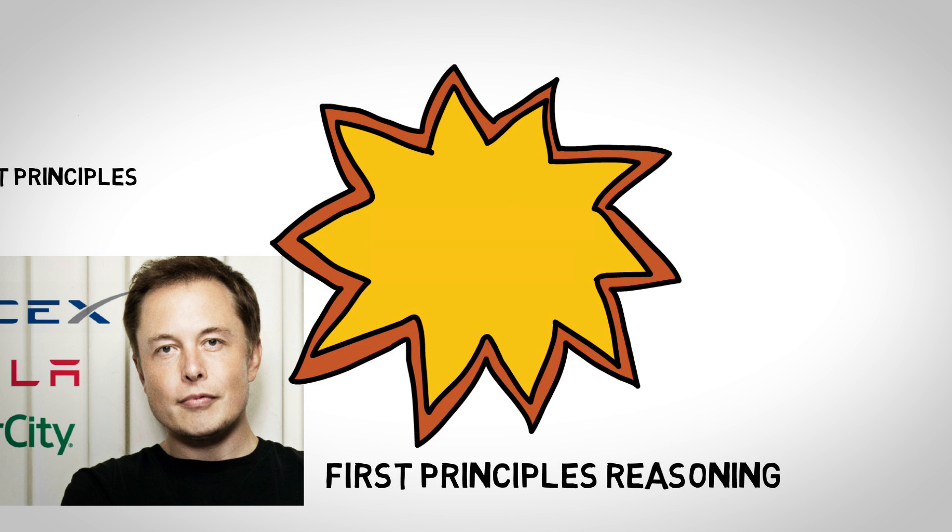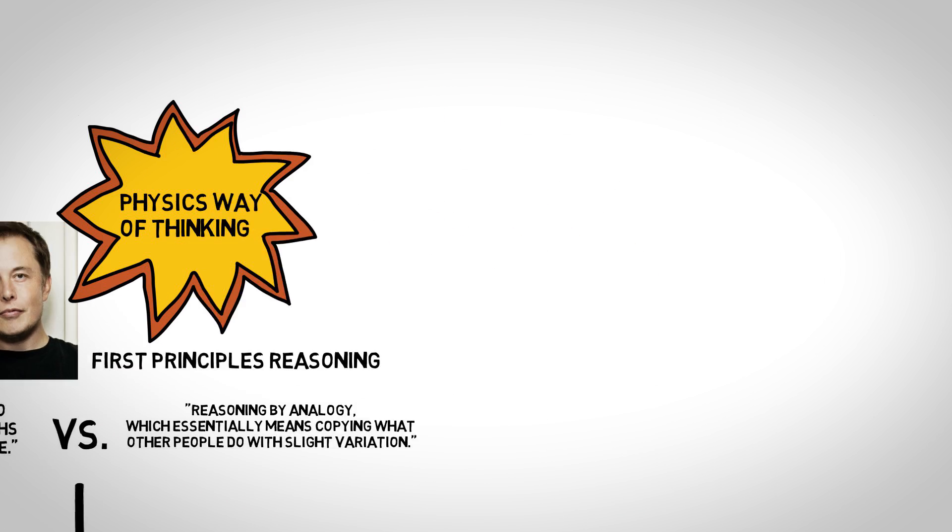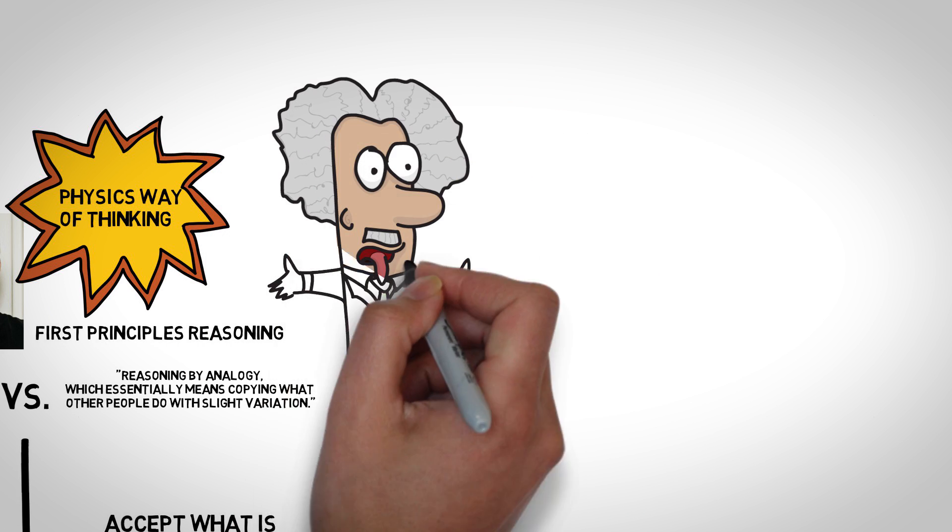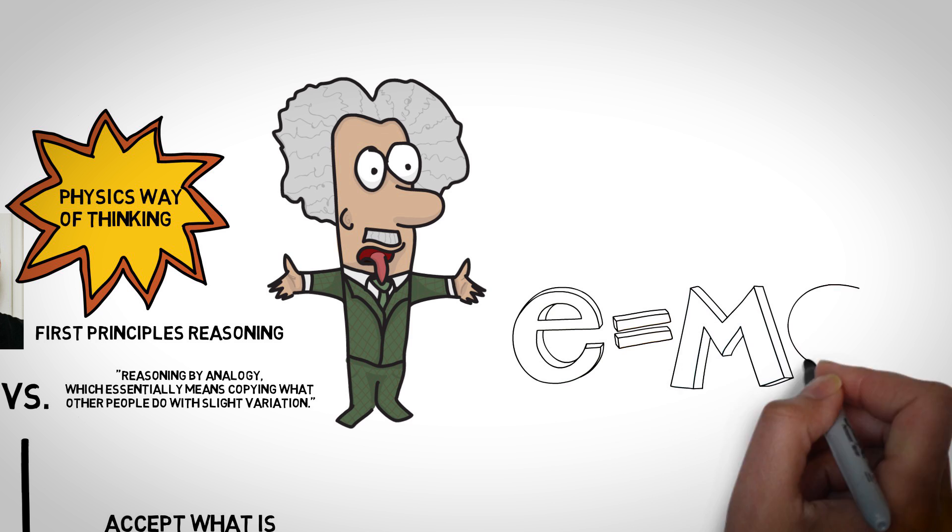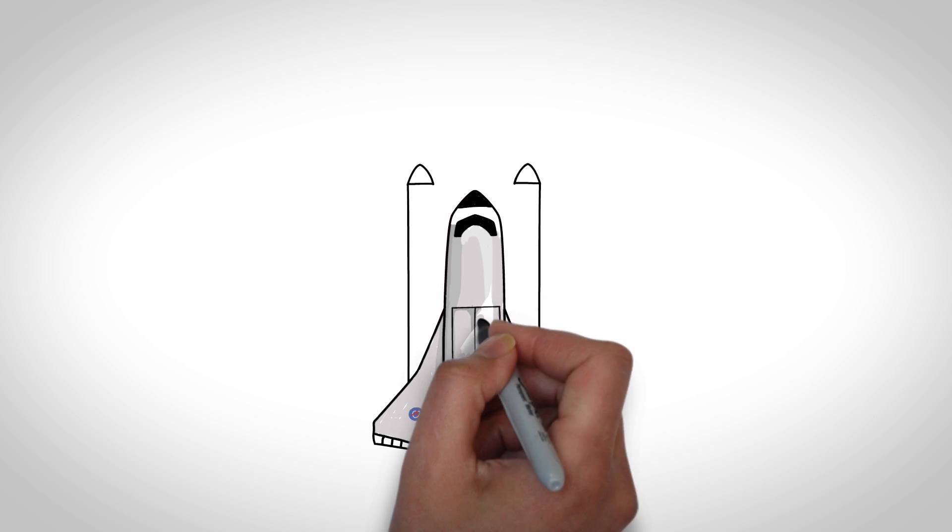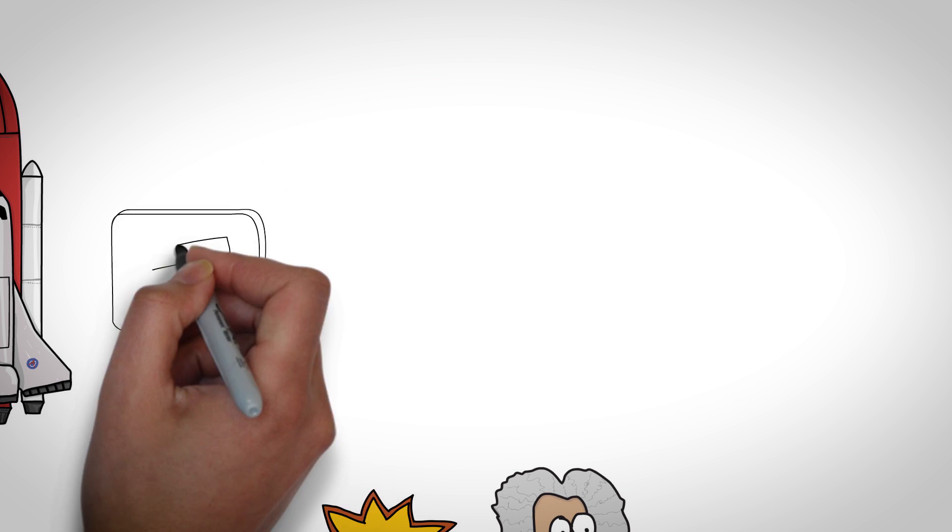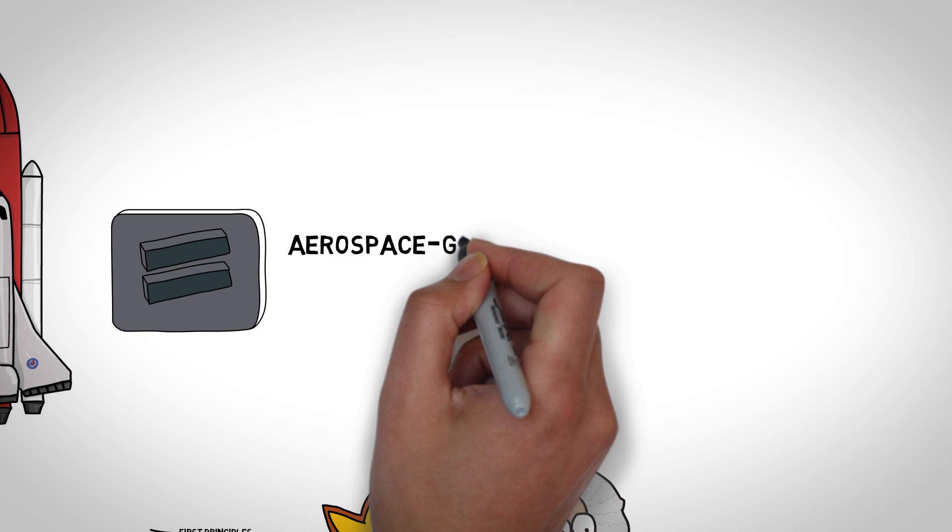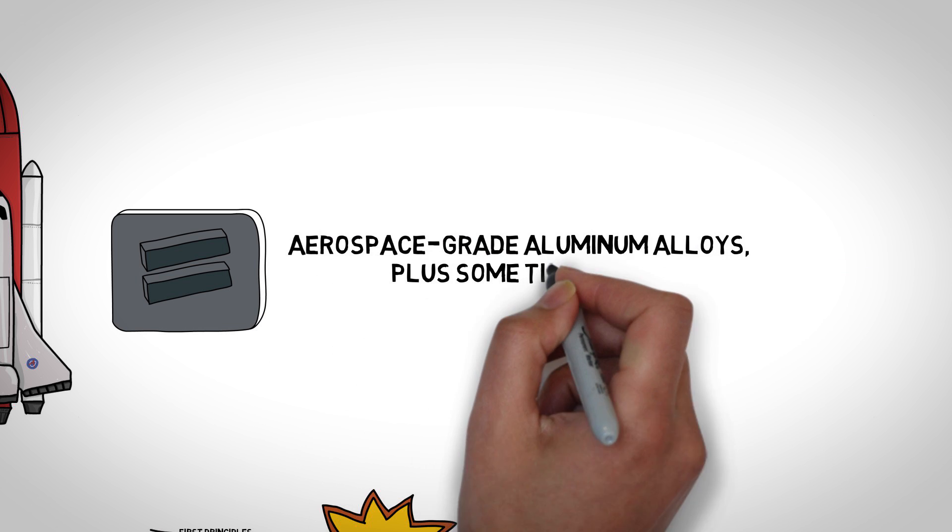Elon calls it a physics way of thinking. In physics, first principles are used when calculations begin with established laws and when no assumptions are made. This is the type of process that Elon goes through. You break down a situation into the core pieces and find a more effective solution from there.